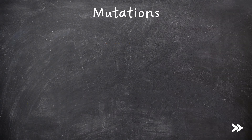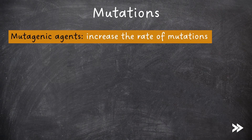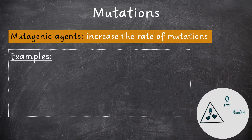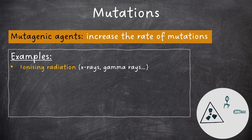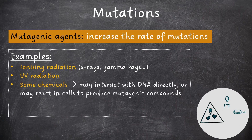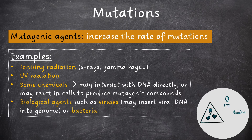Next we need to cover mutagenic agents, which increase the rate of mutations. Examples include ionising radiation such as X-rays and gamma rays, UV radiation, and some chemicals which may interact with DNA directly or may react within cells to produce mutagenic compounds. Finally, biological agents such as viruses, which may insert their viral DNA into the genome, or bacteria.